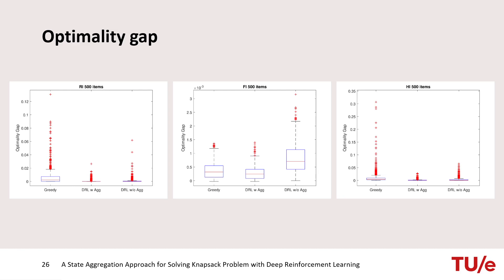In order to show that the difference between the solution value of different algorithms is significant, they plot the distribution of the optimality gaps. As you can see, the solution obtained by deep reinforcement learning with aggregation has considerably smaller optimality gap.